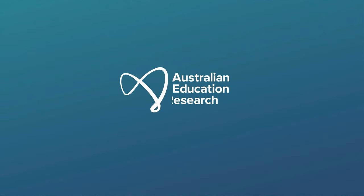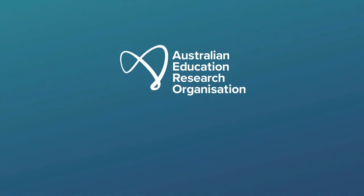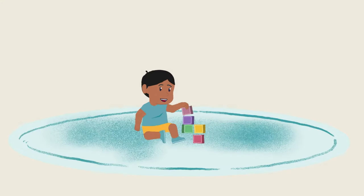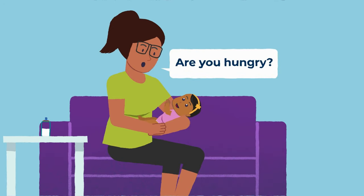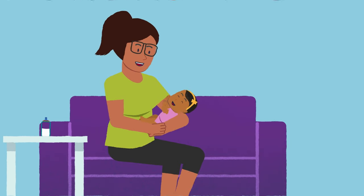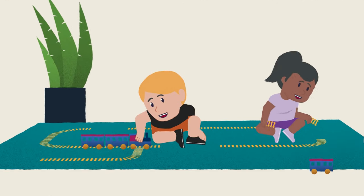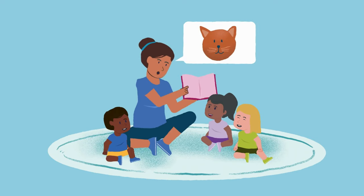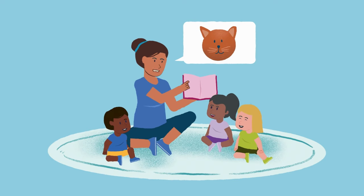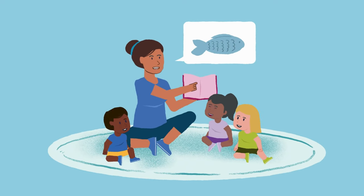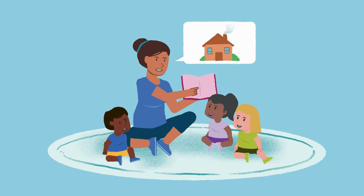The Australian Education Research Organisation has released a suite of evidence-based resources which offer deeper insights into the building blocks of children's learning, development and wellbeing. The early childhood learning trajectories can be used to support children's learning and development from birth through the years before full-time schooling. They support educators and teachers to plan for what's ahead, deepen analysis of learning and offer a common language for children's learning and development.